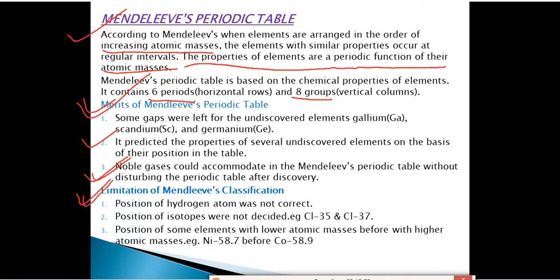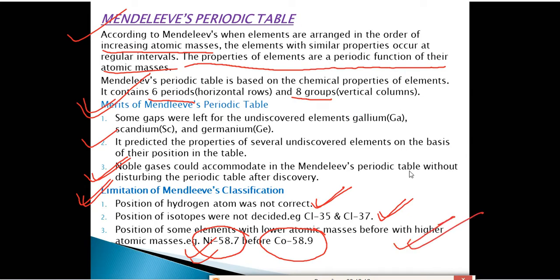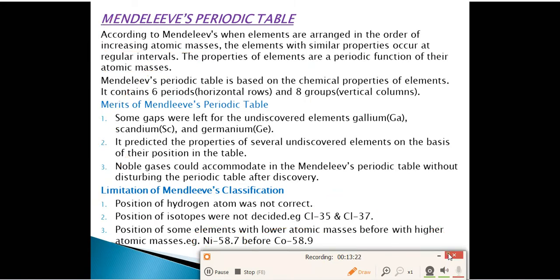Limitations of Mendeleev's Periodic Classification: First, the position of hydrogen was not correct. Second, the position of isotopes — for example, chlorine-35 and chlorine-37 — was not decided. Third, some elements with lower atomic masses were placed before elements with higher atomic masses; for example, nickel (atomic mass 58.7) was placed before cobalt (atomic mass 58.9), which contradicted his own rule of increasing atomic masses.